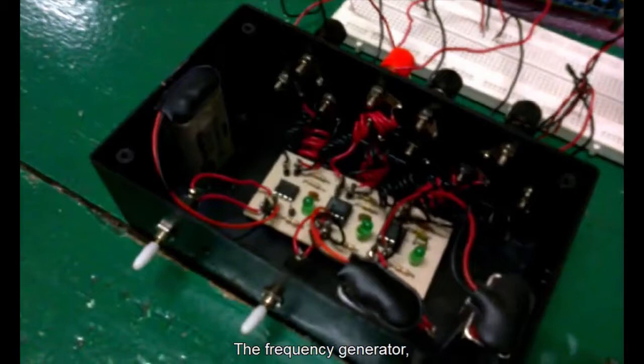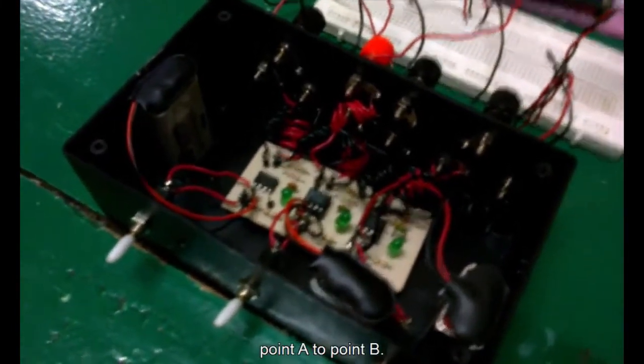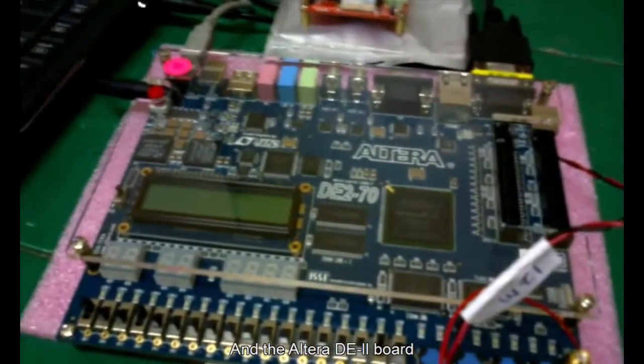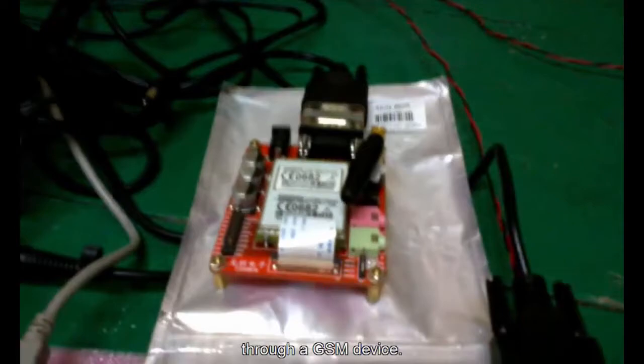the frequency generator activates to detect the telephone cable length from point A to point B. The Altera DE2 board processes the data and sends a message to the person in charge's mobile phone through a GSM device.